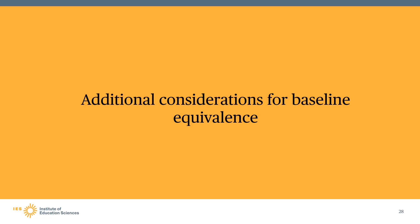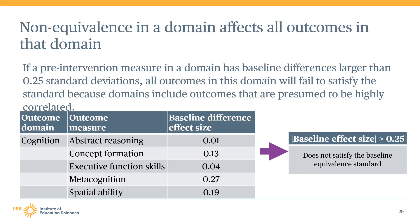Let's now discuss some additional considerations regarding how the WWC assesses baseline equivalence and how study findings can satisfy the baseline equivalence standard. One important consideration is that a baseline difference of 0.25 standard deviations for any specified pre-intervention measure in a given outcome domain means that all outcomes in that domain fail to satisfy the baseline equivalence standard.